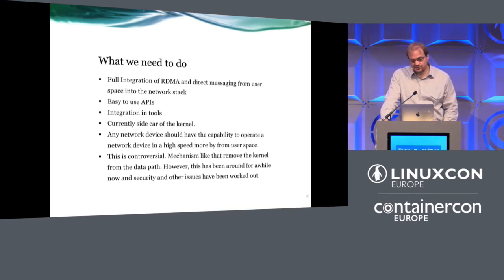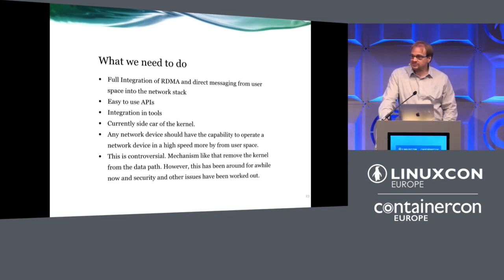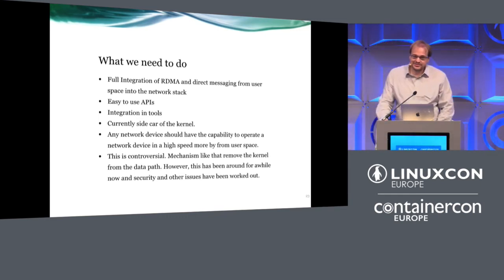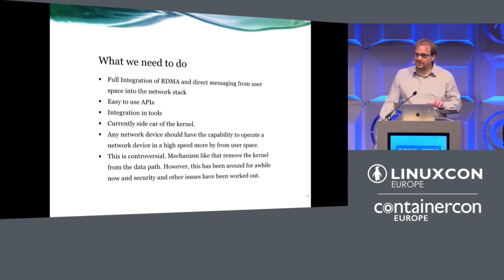What I've heard from vendors is they intend to start a war on who has the fastest network. Every two years they plan to double the speed of networking, with the idea that by the mid-2020s we'll end up with one terabit into a server. To keep up with that, we need better ways to deal with this. Since we can't increase single-core speed significantly anymore, we need other ways to get direct access into memory.